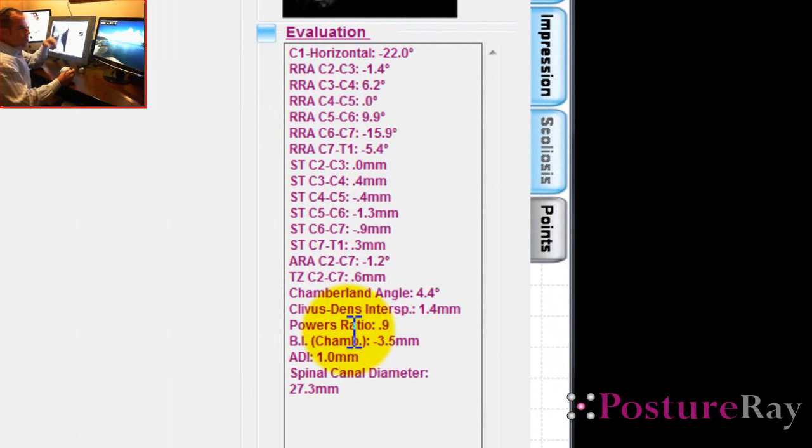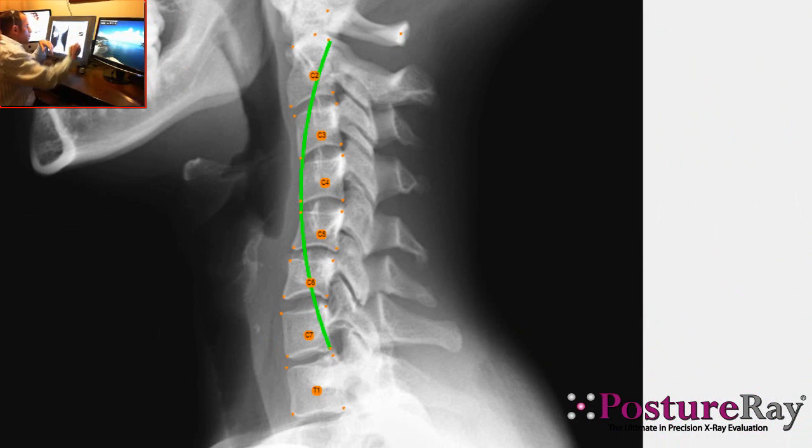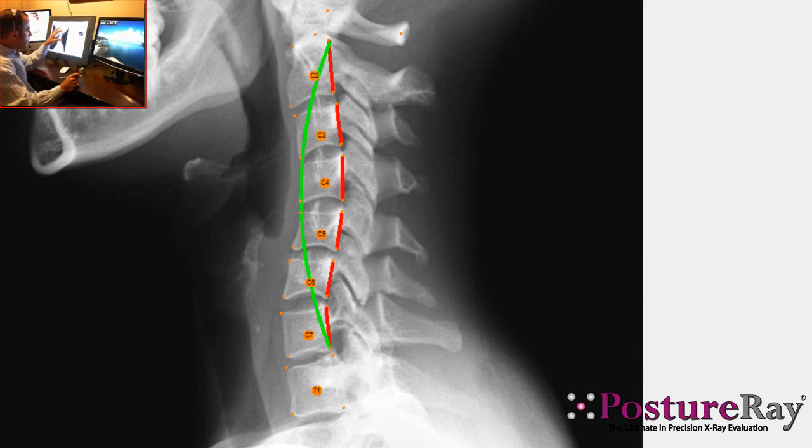If you wanted to see the normal lines that we published in Spine, you can see that we can superimpose the normal lines. No other software can do this arc that was published in Spine in 1996 and 2004 and verified in JMPT. That is the CBP normal line, the elliptical model. No other software can superimpose that.